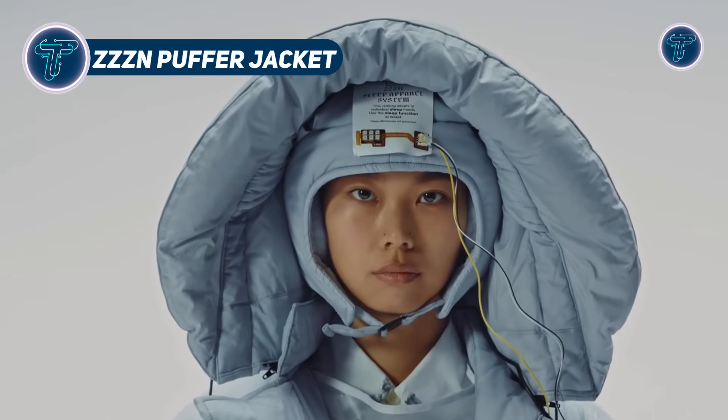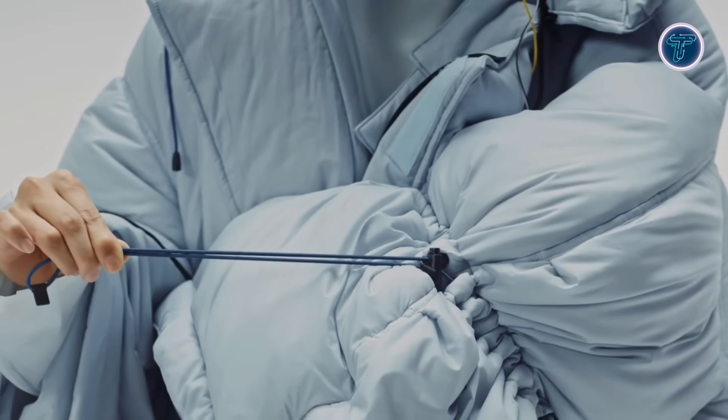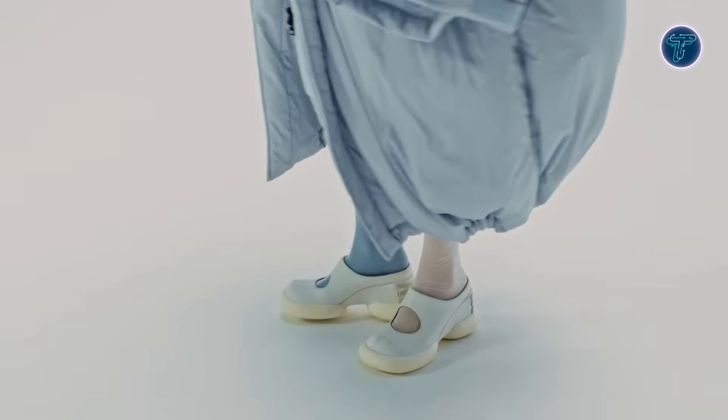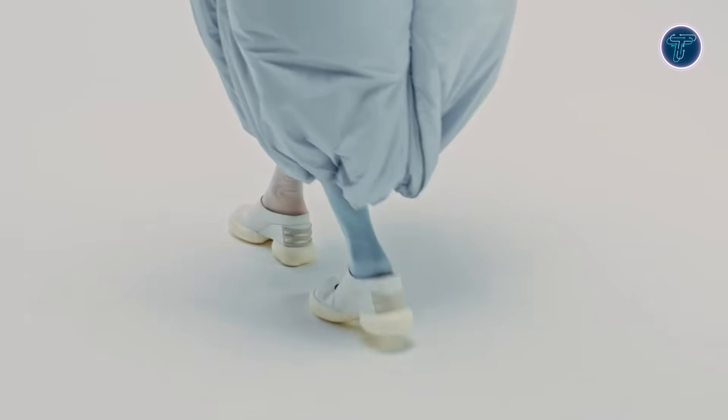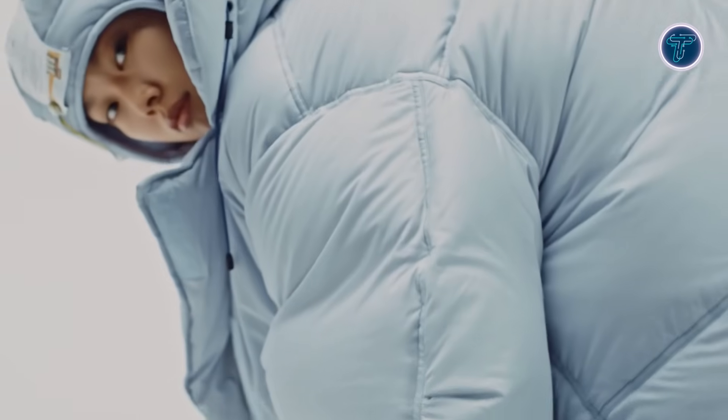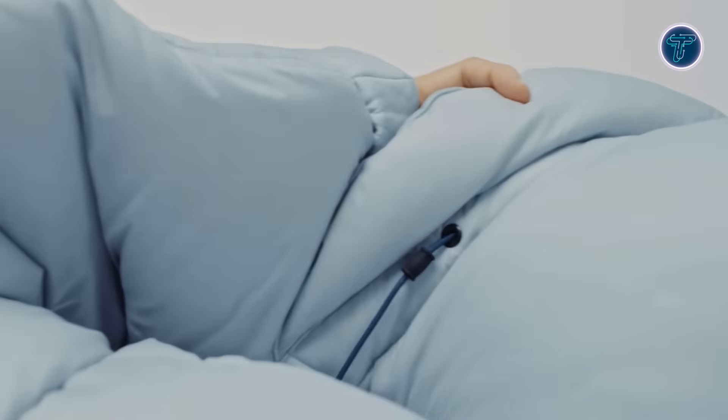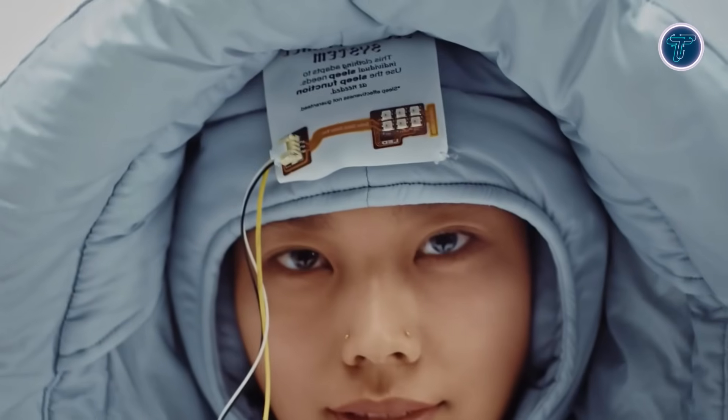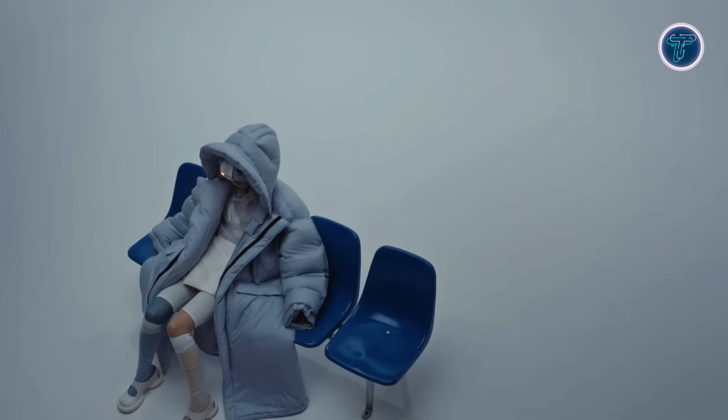ZZZZN Puffer Jacket. The ZZZZN Puffer Jacket redefines wearable comfort with integrated sleep-enhancing technology. Engineered with photoelectric fiber insulation, it mimics the warmth of a duvet while remaining lightweight and breathable. Its standout feature is a biometric integrated system that works with a companion wearable, the SoxEye ring, to monitor heart rate, stress, and sleep cycles. Built-in headphones inside the deep, insulated hood play binaural beats and calming frequencies designed to ease users into sleep. Meanwhile, an embedded light therapy module simulates natural day-night rhythms. Soft red hues promote relaxation at night, while blue morning light helps the body wake gently.